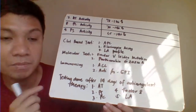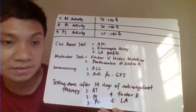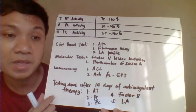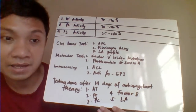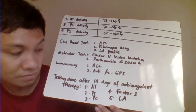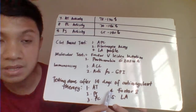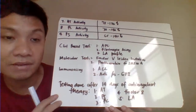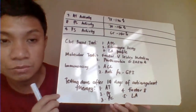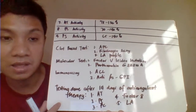Important note: if the patient is on anticoagulant therapy, the following tests should be performed 14 days after completing anticoagulant therapy to prevent interference with results. The affected tests include antithrombin, protein S, protein C, Factor VIII, and lupus anticoagulant.